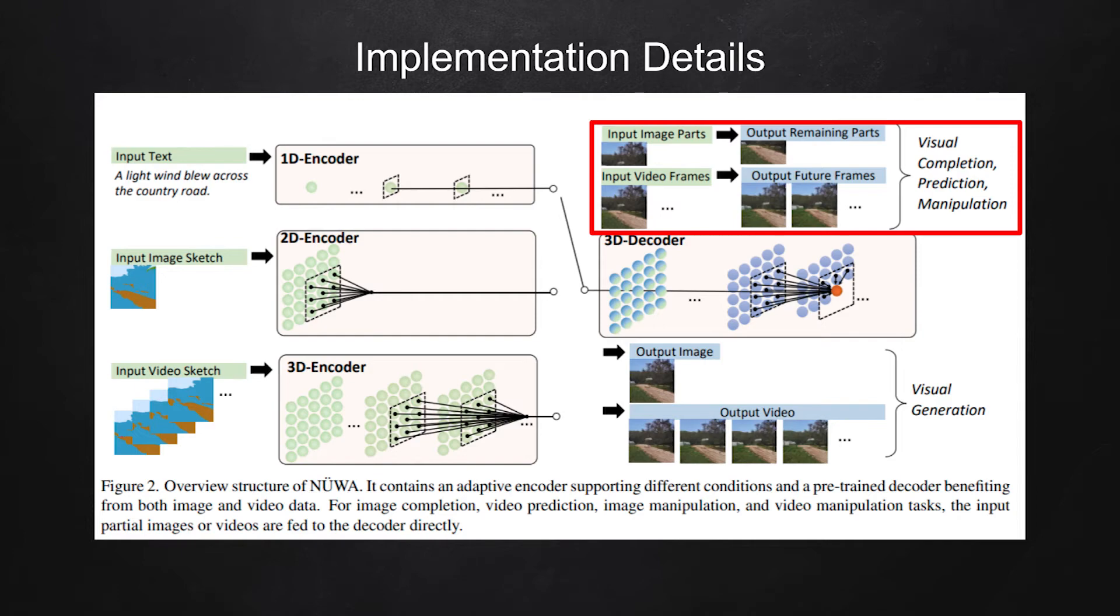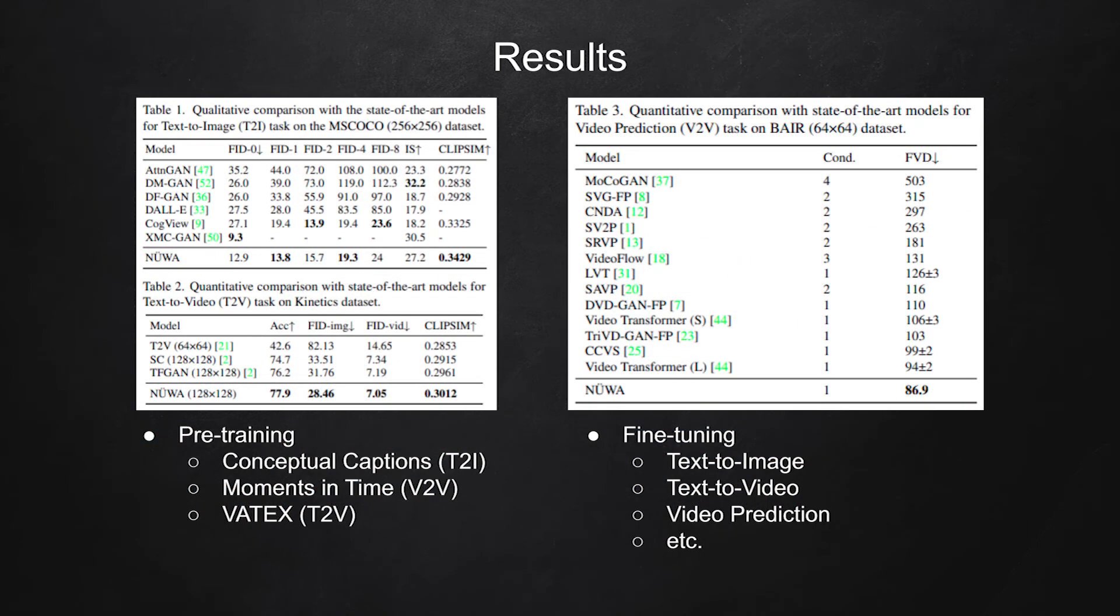This model is first trained on three datasets, including conceptual captions for text to image generation. The model is first pre-trained on these datasets.